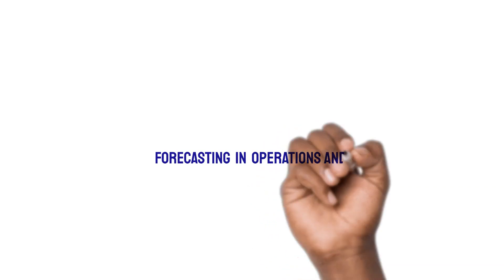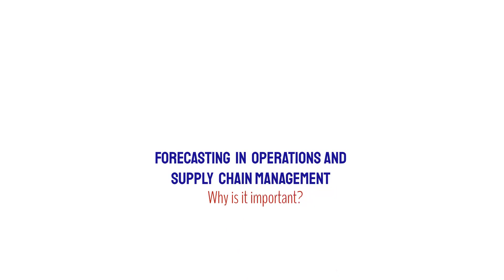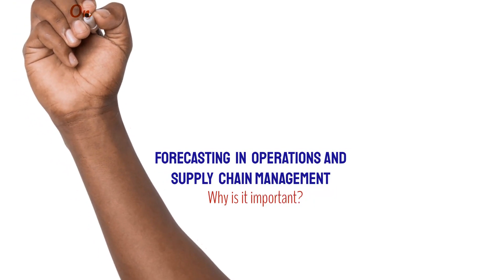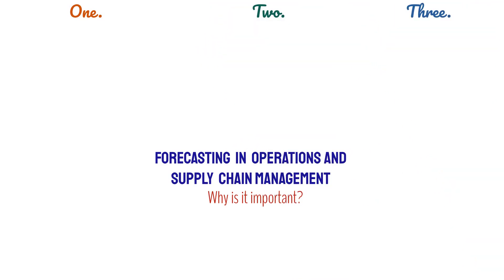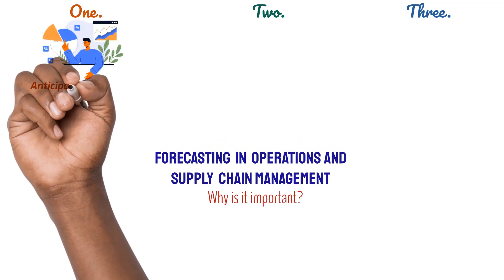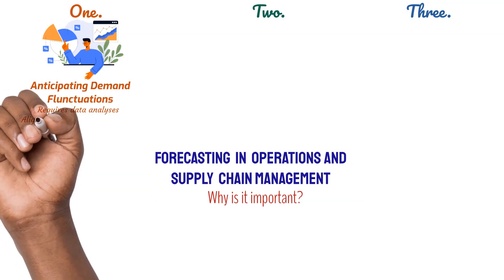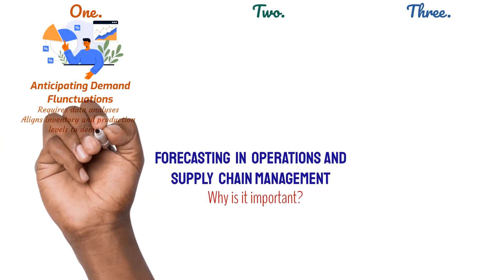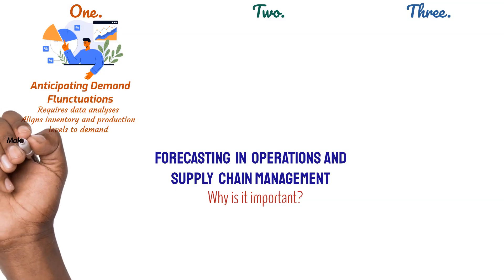Why is forecasting important to the planning and control of operations and supply chains? There are three main reasons why forecasting is particularly important when reconciling the ability of an organization to supply goods and services to the demand of customers. The first reason is that forecasting helps organizations anticipate demand fluctuations. This is achieved by analyzing historical data and market trends. Based on these analyses, businesses can make informed predictions about future demand for their products or services, enabling them to align their production and inventory levels with expected demand.